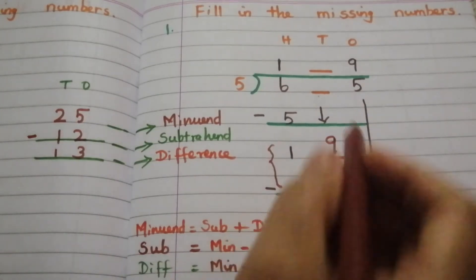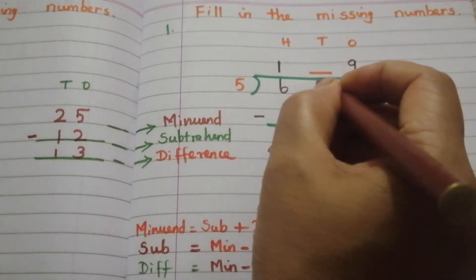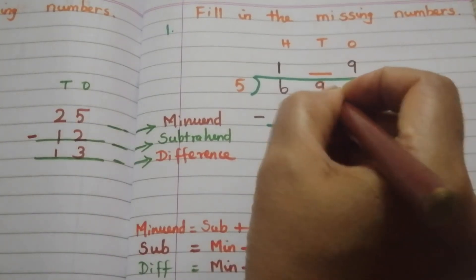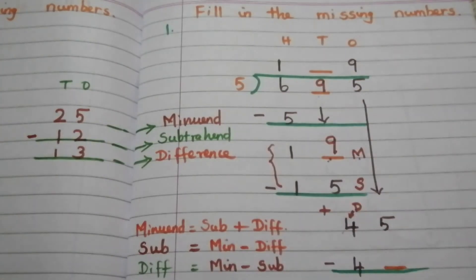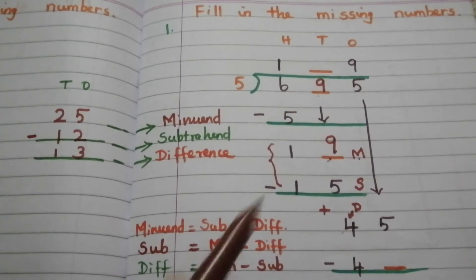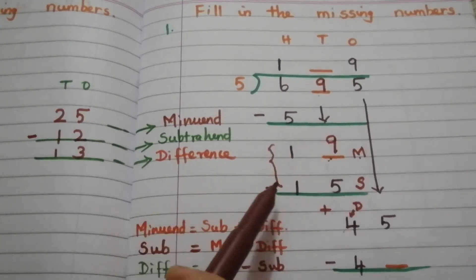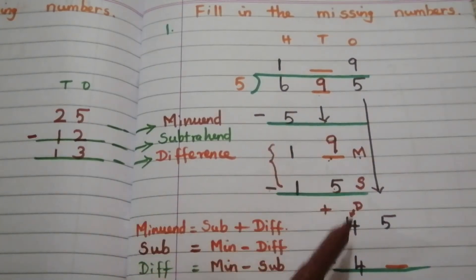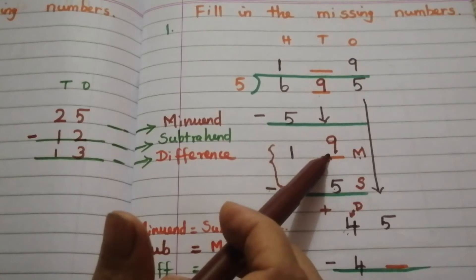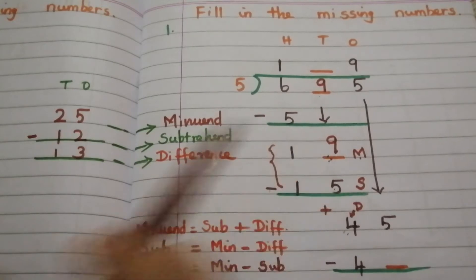This 9 here means that value is also 9. We can verify: 9 minus 5 is 4, so our answer is correct.